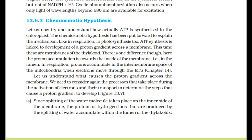The chemiosmotic hypothesis explains how ATP is synthesized in the chloroplast. Like in respiration, in photosynthesis too, ATP synthesis is linked to development of a proton gradient across a membrane — this time the membranes of the thylakoid. Here, the proton accumulation is towards the inside of the membrane, i.e., in the lumen. We need to consider what causes the proton gradient across the membrane.